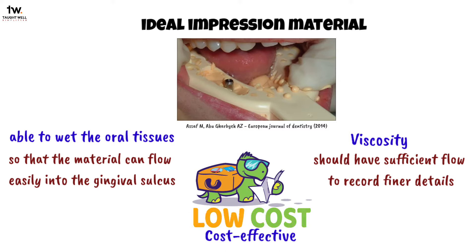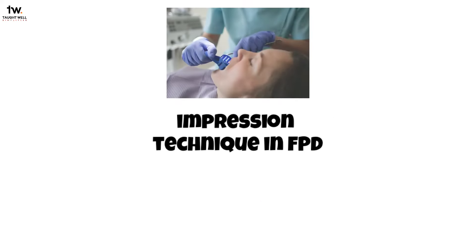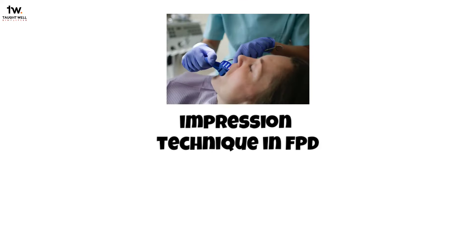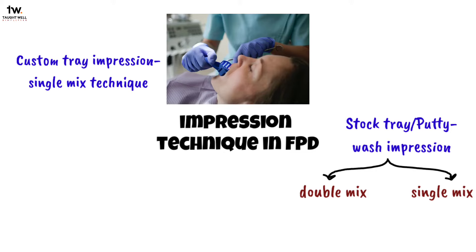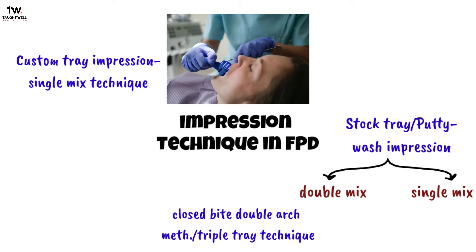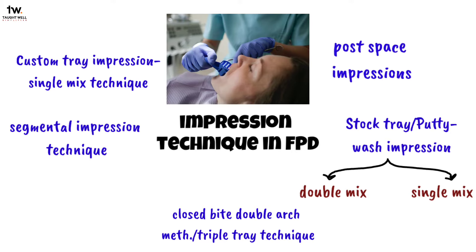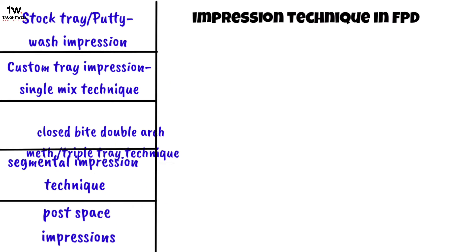Now let's look at the different impression techniques in fixed partial dentures. In the stock tray or putty wash impression technique, there are two types: double mix and single mix. Next is the custom tray impression single mix technique, the closed bite double arch method or triple tray technique, the segmental impression technique, and post-space impressions. Let's have a look at them one by one.